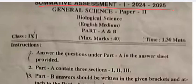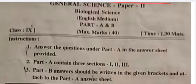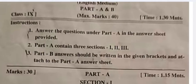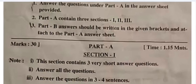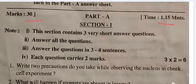General Science Paper 2, that is Biological Science, Class 9th. Part A and Part B are given, but here Part A is 30 marks, time 1 hour 15 minutes.